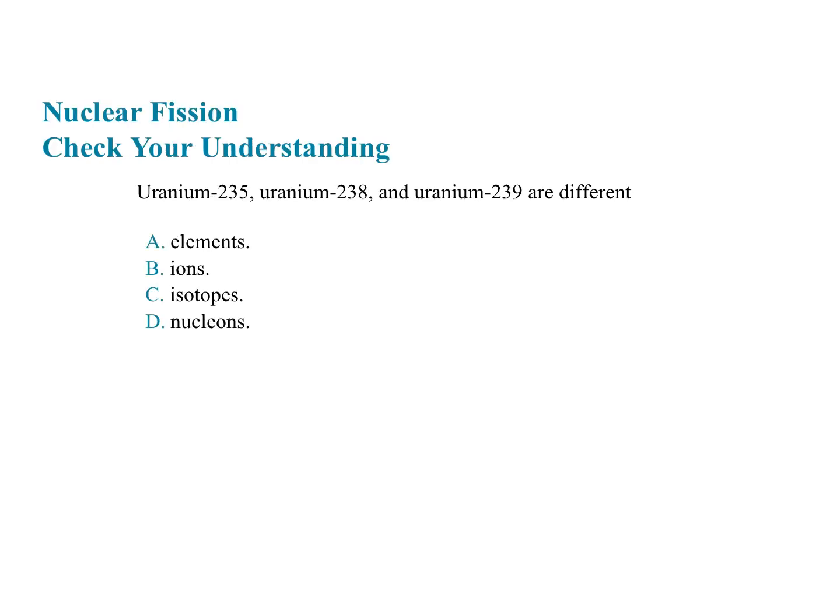Let's take a check-your-understanding quiz: uranium-235, uranium-238, uranium-239 — what do those numbers mean? Are they different elements, different ions, different isotopes, or different nucleons? They're not different elements because they're all uranium. An ion involves electrons being added or removed, so it's not that either. What's actually changing is the mass — 235, 238, 239 are the atomic masses. Since the number of protons stays the same but the masses differ, the number of neutrons is different, which means we're talking about different isotopes.